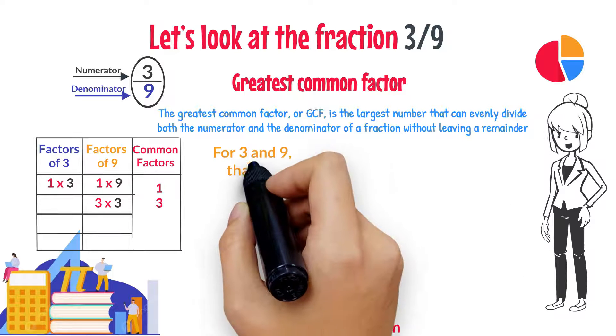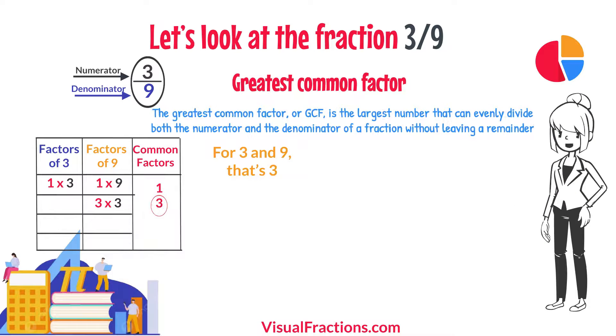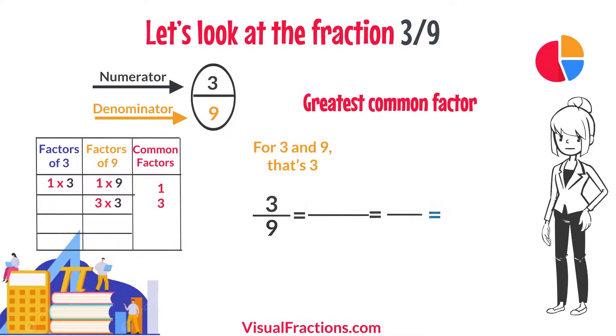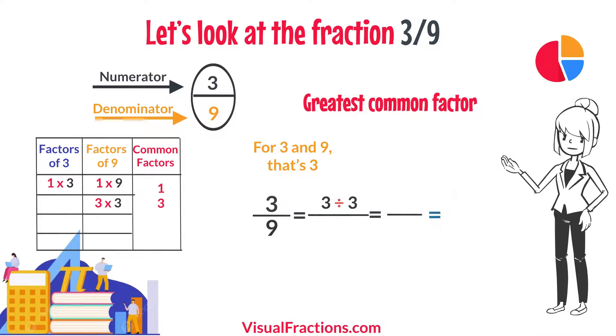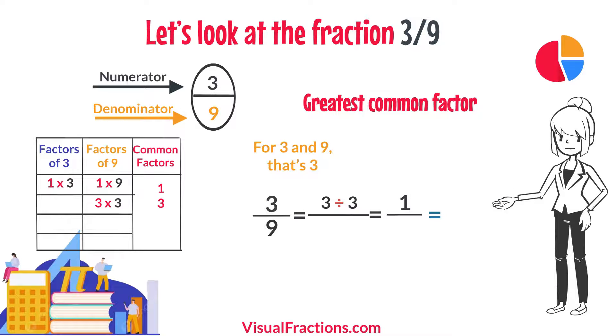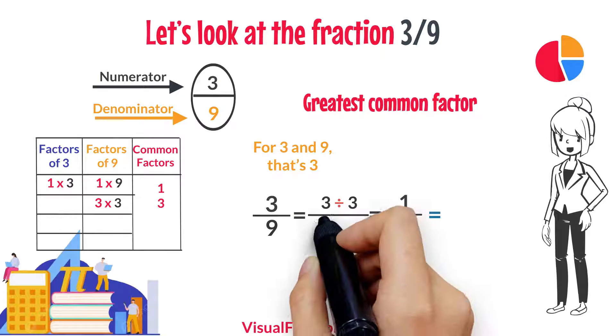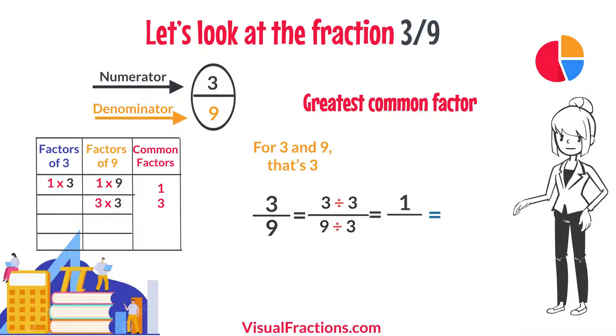For 3 and 9, that's 3. We start by dividing 3 by 3, which gives us 1. Then we divide 9 by 3, which results in 3.